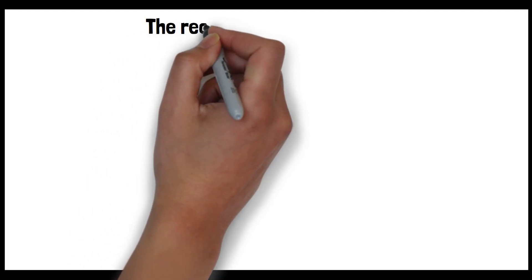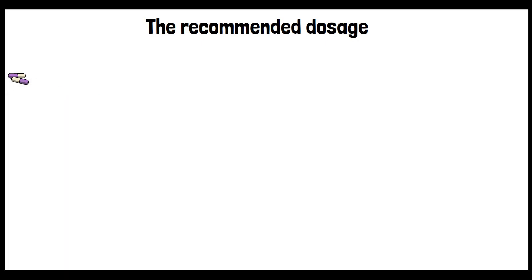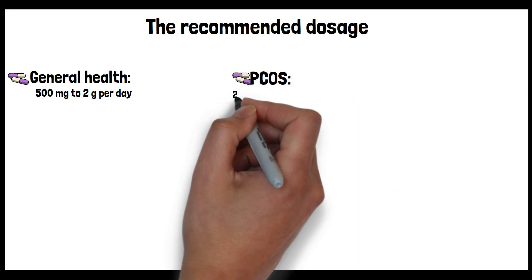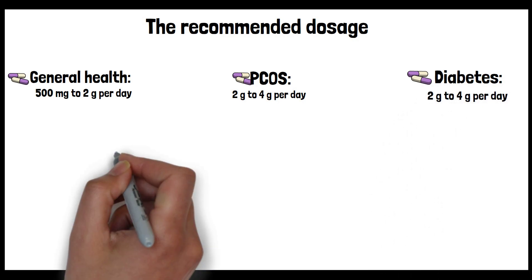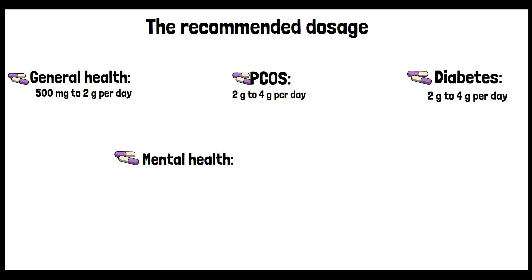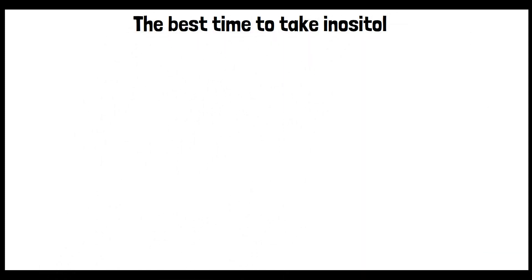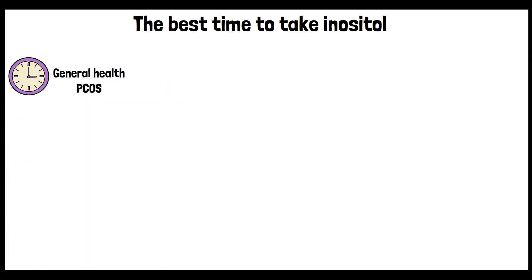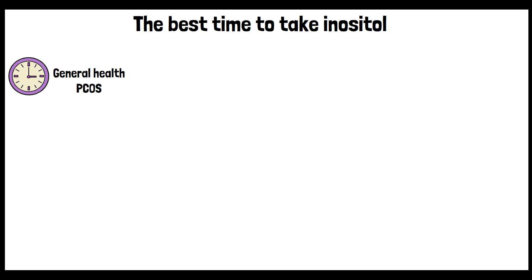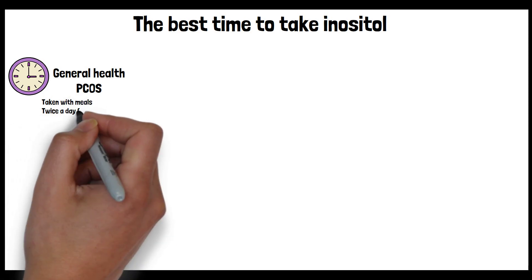The recommended dosage of inositol can vary based on age, gender, and specific health goals. For general health, doses can range from 500 mg to 2 g per day. In the treatment of conditions like PCOS, 2 to 4 g per day are often used. For metabolic syndrome or diabetes, a higher dose of 2 to 4 g per day is commonly used. For mental health conditions like anxiety or depression, studies have used doses ranging from 2 g to 18 g per day. For sleep improvement, the dosage can range from 500 mg to 2 g per day. Always start with a lower dose to monitor the effects. Inositol for general health or PCOS is often taken with meals to enhance absorption and minimize gastrointestinal side effects, and splitting the dosage morning and evening can help maintain stable levels.